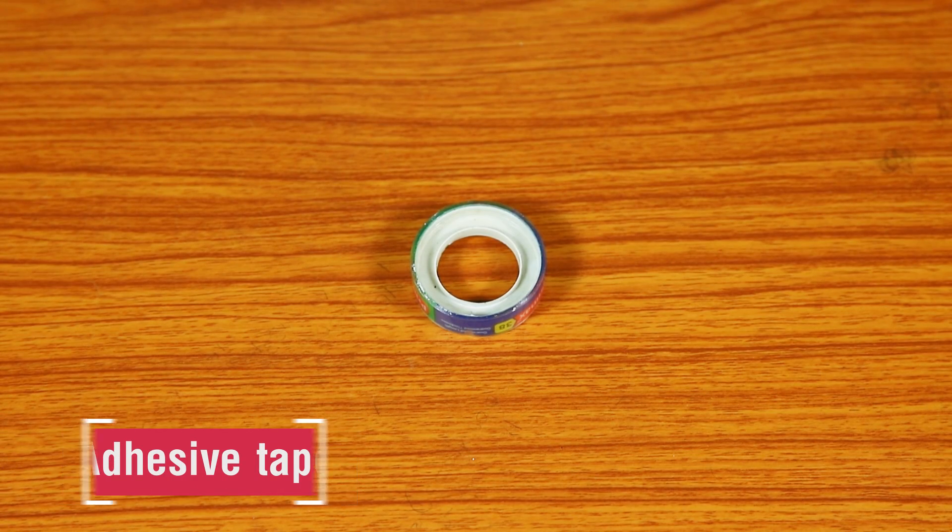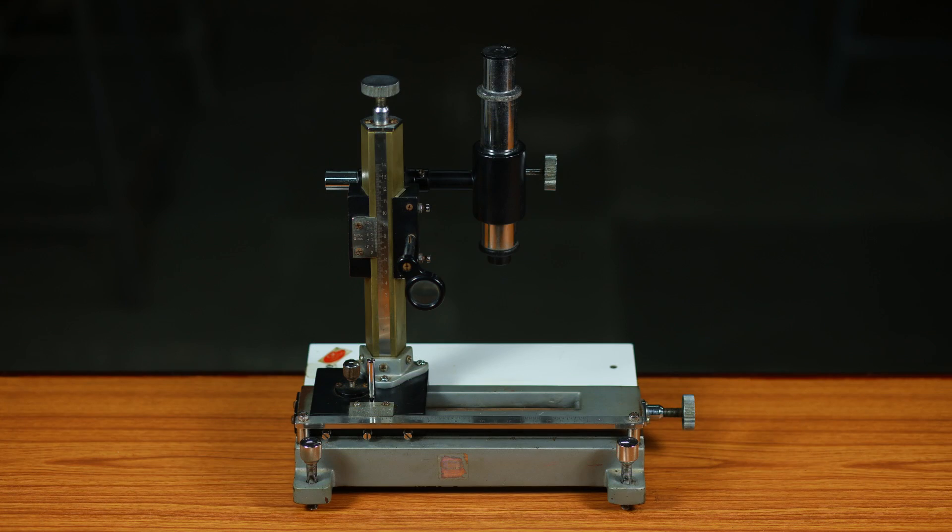The travelling microscope has the following parts: eyepiece, objective, vertical main scale, vertical vernier scale, horizontal vernier scale and horizontal main scale.